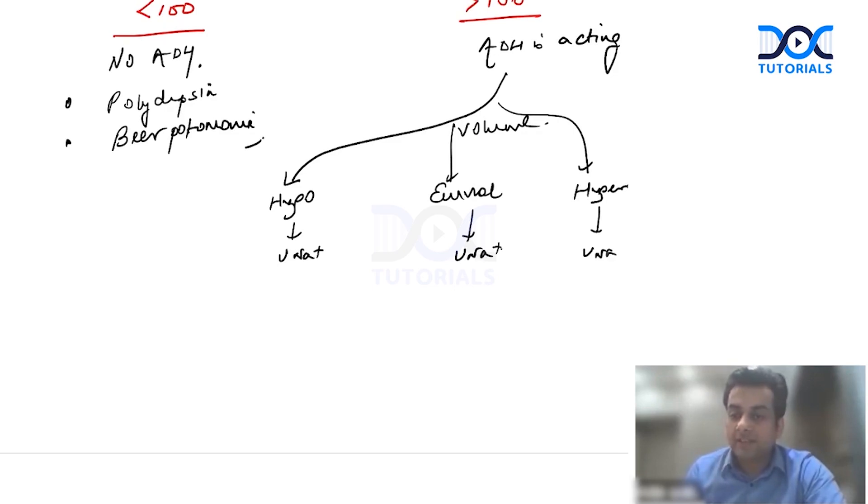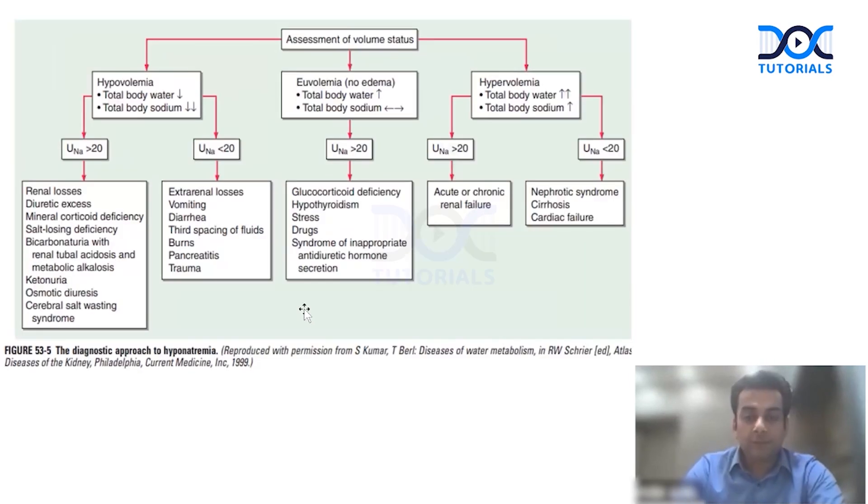It can be further divided, just like this, as we have been studying this table in the Harrison's. I have told you the basic concept even before this. So in a hypovolemic hyponatremia, if the urine sodium is less than 20, it means that the body has lost sodium from an extrarenal cause, for example from vomiting, diarrhea, third spacing, pancreatitis, burns, trauma, etc. If it is more than 20, then it has a renal cause, the most common of which is diuretics. It could be mineralocorticoid deficiency, salt losing nephropathy, it could be osmotic diuresis or cerebral salt wasting.